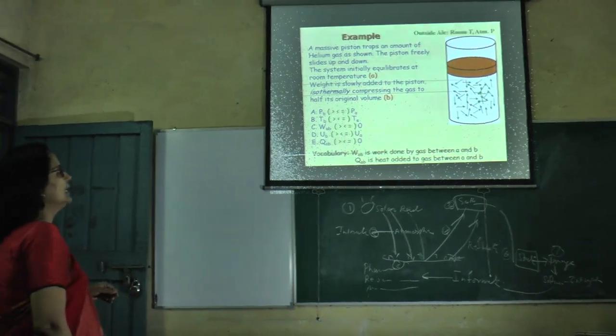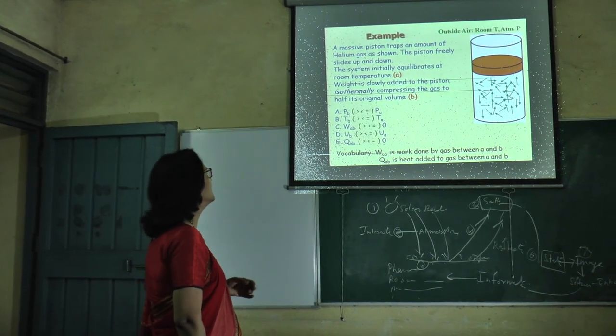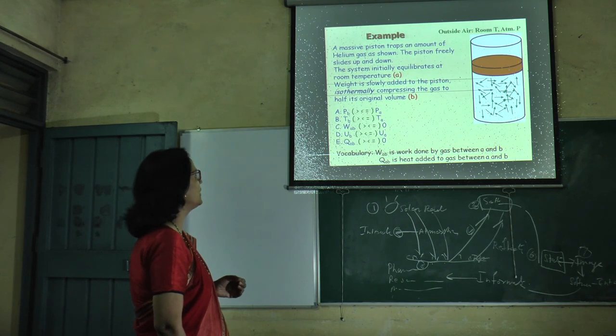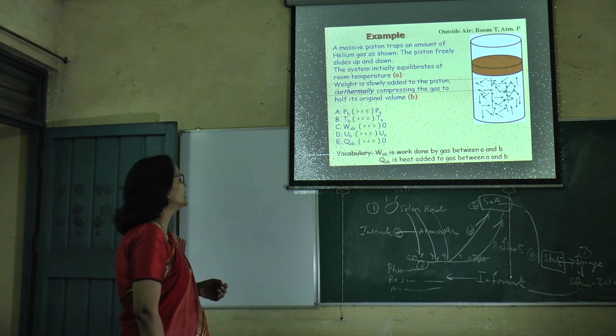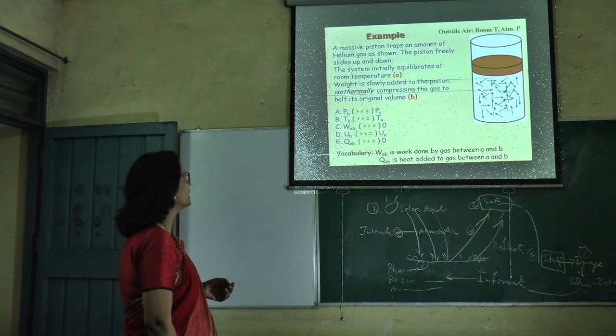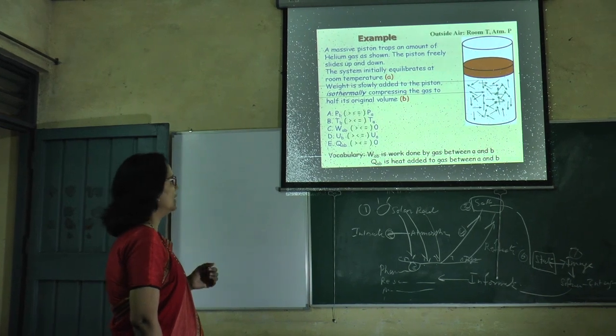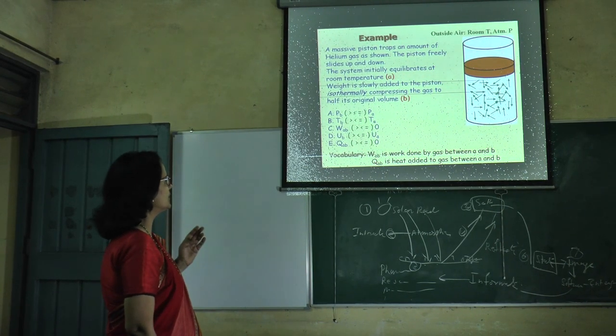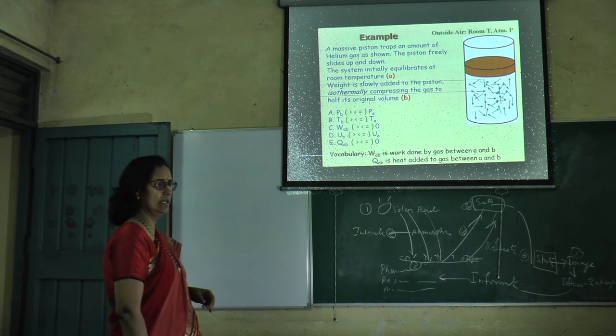Some examples are here. A piston and cylinder system with amount of ideal gas, as shown in the system, slides up and down. The system initially equilibrates at room temperature A. Second, the weight is slowly added to the system. Isothermal operation of the gas compresses it to half its original volume B. Five conditions are here: A, B, C, D, E. By five conditions, we know which type of changes occur in the system.